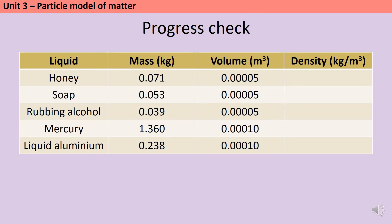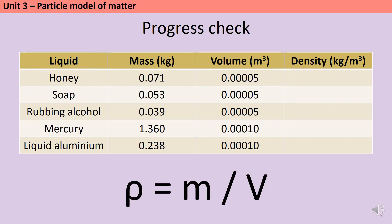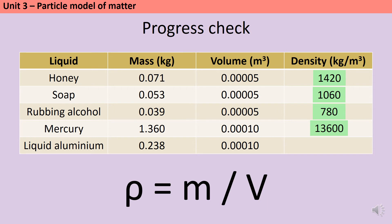Here's an opportunity to have a go at a few more calculations. For these five liquids, use the formula density equals mass divided by volume. The masses and volumes have already been converted into appropriate units, so pause the video and give the calculations a go. The density of honey is 1,420, soap is slightly lower at 1,060, rubbing alcohol is less dense than water at 780, mercury is incredibly dense at 13,600 kilograms per meter cubed, and liquid aluminium has a density of 2,380 kilograms per meter cubed.